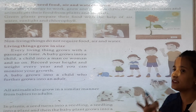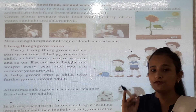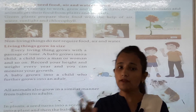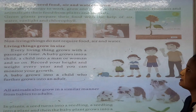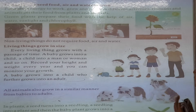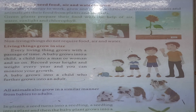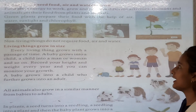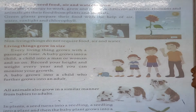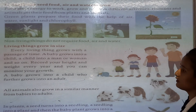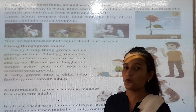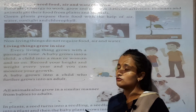Human beings take food from animals and plants. Green plants prepare their food with the help of air, water, sunlight, and chlorophyll. Non-living things do not require food, air, and water.